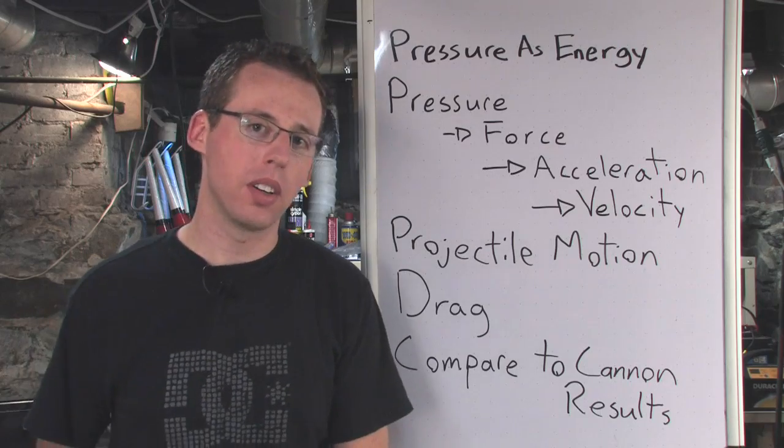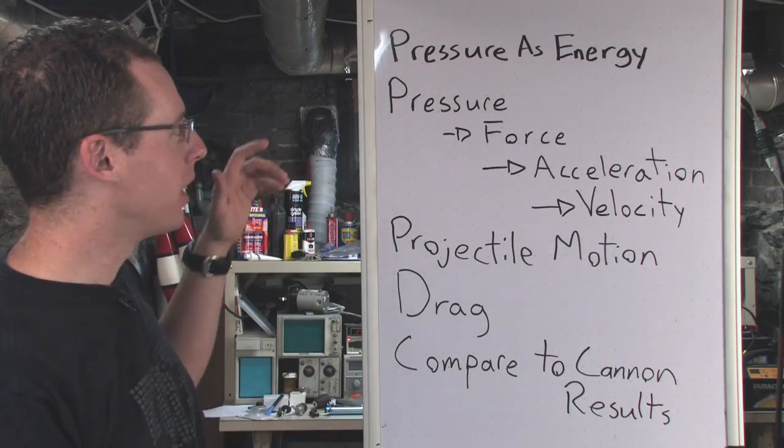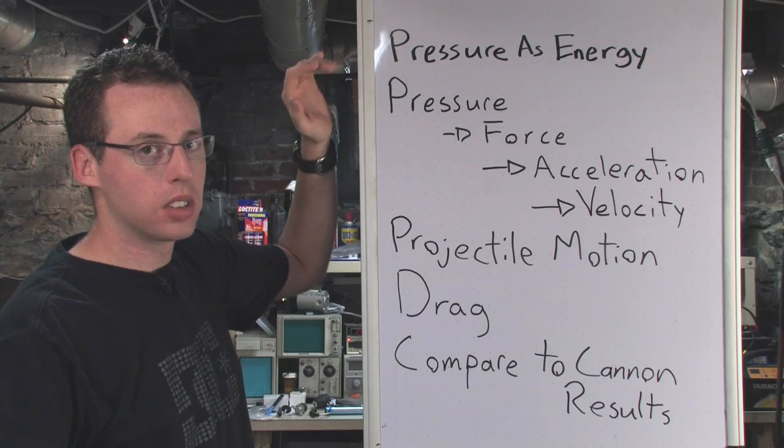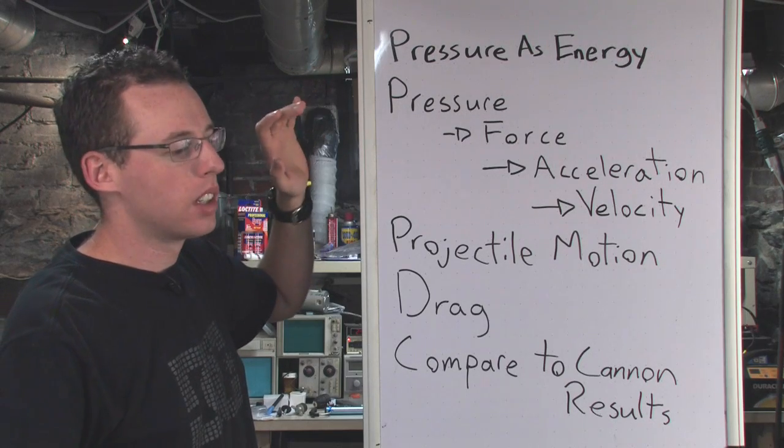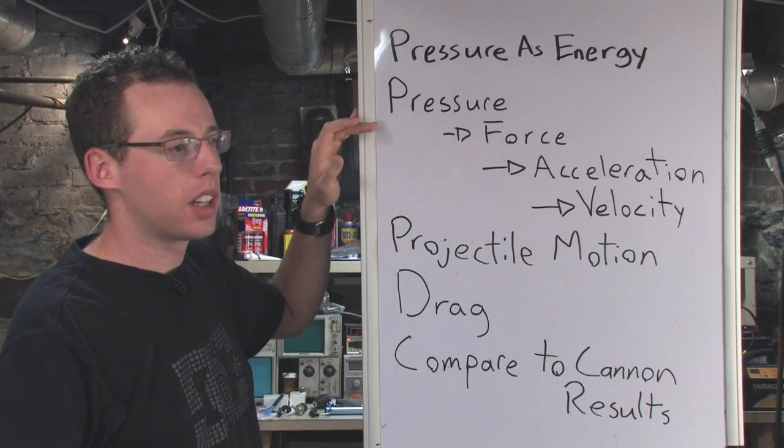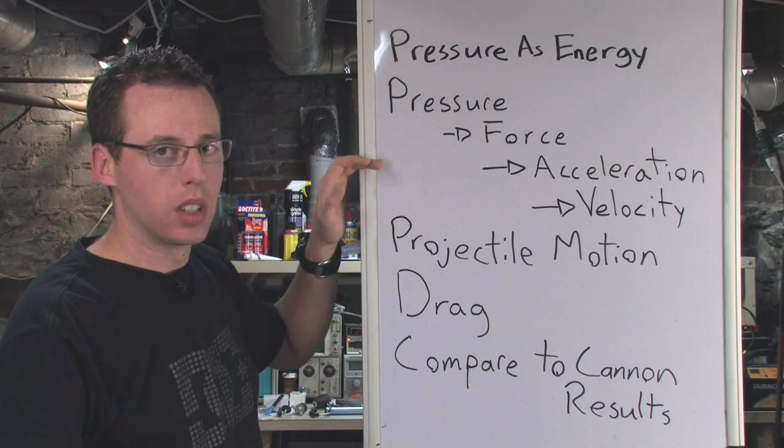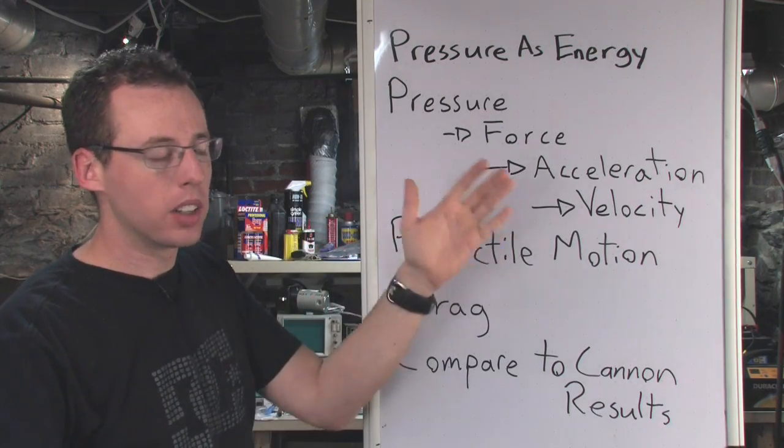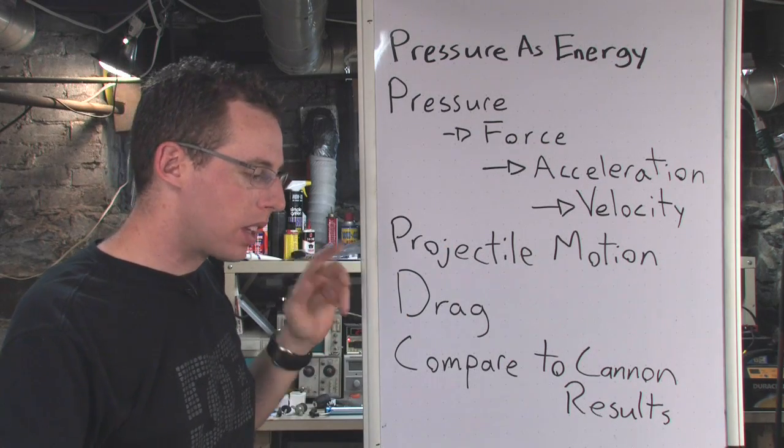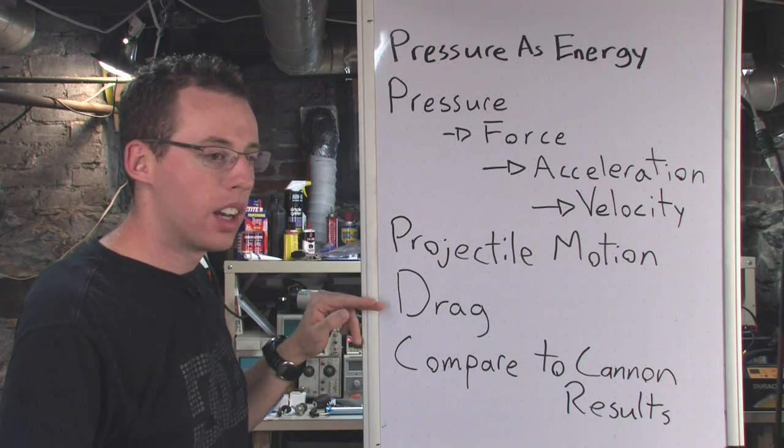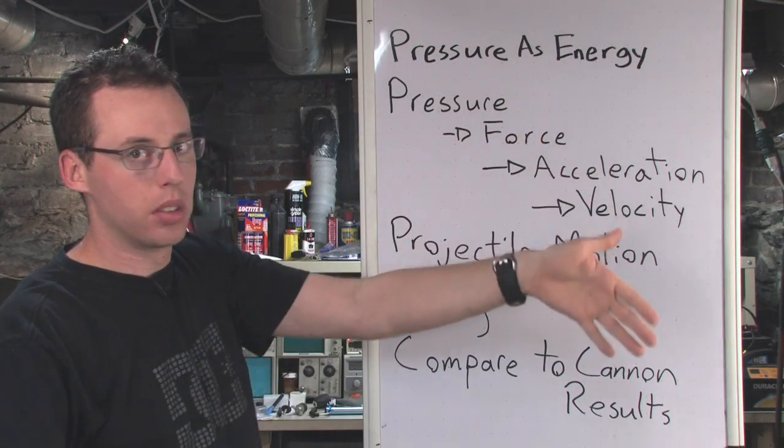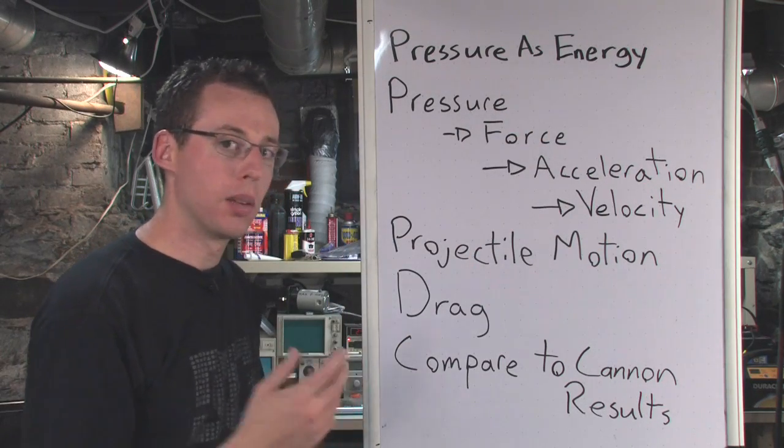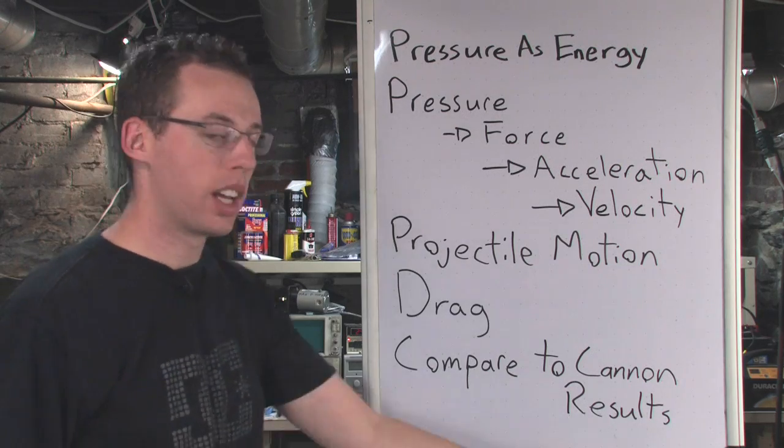There are a few cool things to talk about regarding the science behind the air cannon. I'm going to start by talking about how you can use compressed gas to store energy, and then how we can transmit the force to the projectile using the pressure, which goes to an acceleration and velocity. Once we have that velocity coming out of the barrel, we're going to go into projectile motion. Then I'll talk about how drag affects the path of the projectile through the air. Using all this stuff, we can make some predictions, and I'm going to compare those predictions to our actual cannon results.